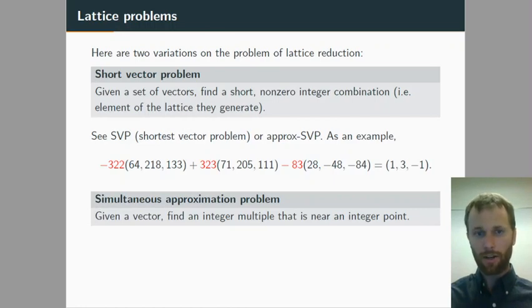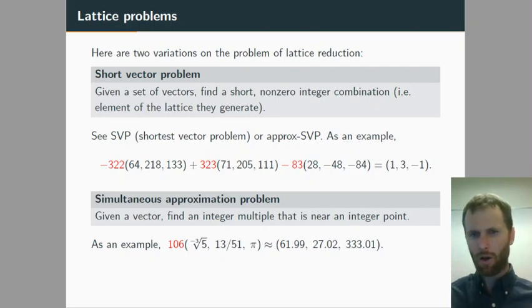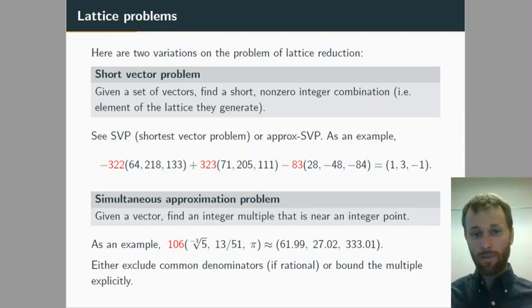Simultaneous approximation problems start with just one vector, and we're asked to find a multiple that's near an integer point, meaning all of its coordinates, the output coordinates, are close to integers. Here's an example, another three-dimensional vector. What integer could we put in place of the red question mark? If you use 106, you see in the output there that each of them is one or two hundredths away from the nearest integer. So it turns out for a vector like this that has irrational entries, there's no limit to how close you could get to an integer point and still not land on it, so it's pretty common to bound the multiple that you might take. So if our bound was, say, 200, then 106 would be a great choice. Or alternatively, if the input vector is rational, then another possibility would just be to exclude the trivial solution, multiples of the least common denominator.